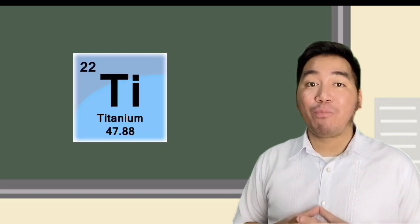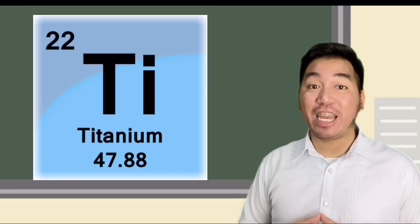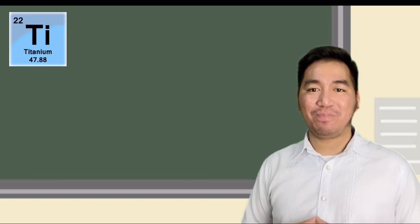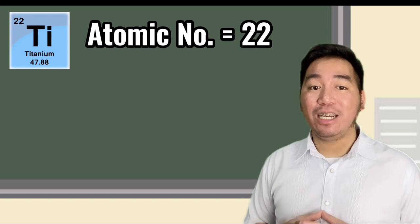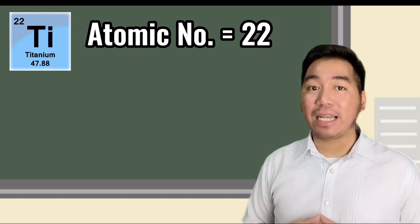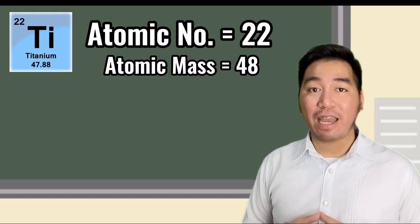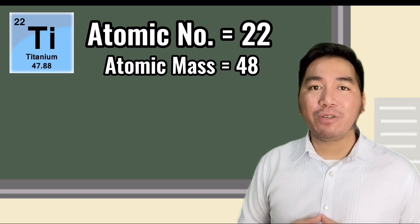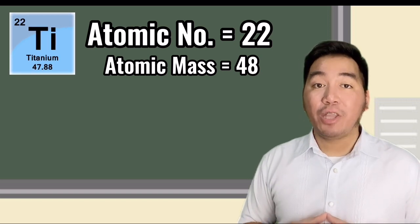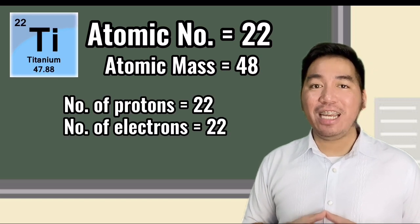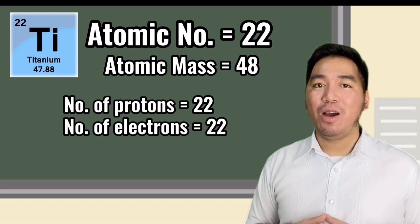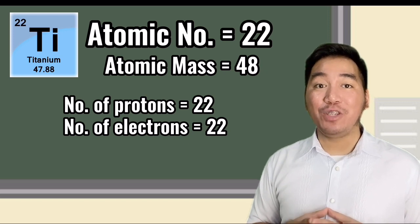Determine the number of protons, electrons, and neutrons of the element titanium. The atomic number of the element titanium is 22. And the mass number is 47.88 or rounded to 48. The number of protons is 22. The number of electrons is also 22. What about the number of neutrons?